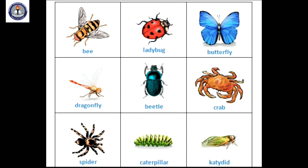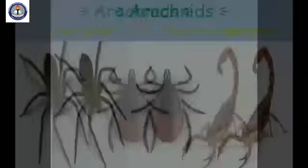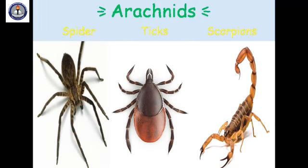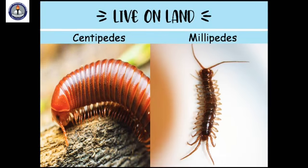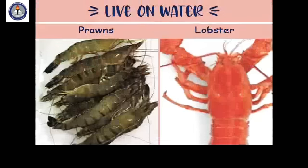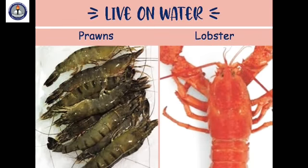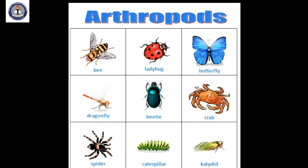Did you know that three quarters of all the animals on our planet are creepy crawlies? This group includes insects, spiders, scorpions, centipedes, and millipedes found on land, and prawns, crabs, and lobsters found under water. They have no skeleton inside their bodies. They come under the group arthropods, as they have jointed legs and a hard outer shell.